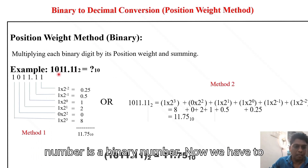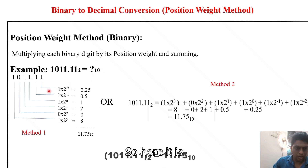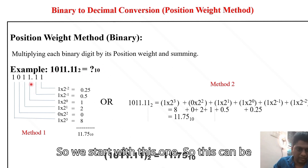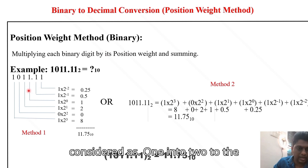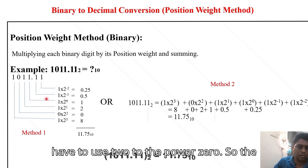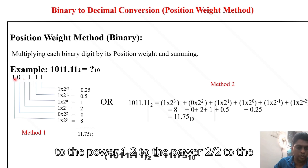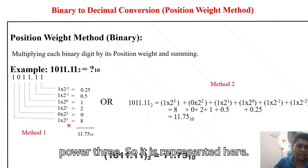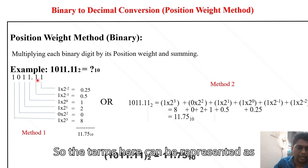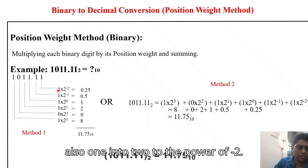Now let's convert the binary number 1011.11 into decimal. Starting from the rightmost integer bit, this is 1 × 2⁰. Moving left, the bits are multiplied by 2¹, 2², and 2³ respectively. For the fractional part after the dot, the first bit is 1 × 2⁻¹ and the next is 1 × 2⁻².